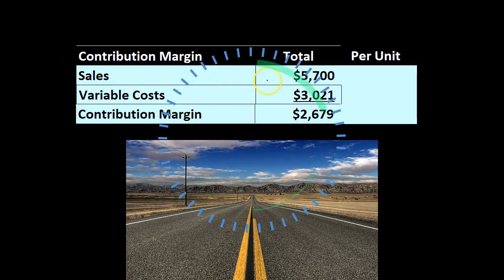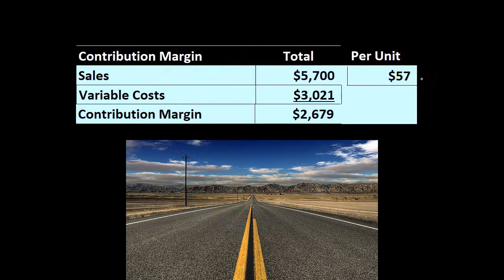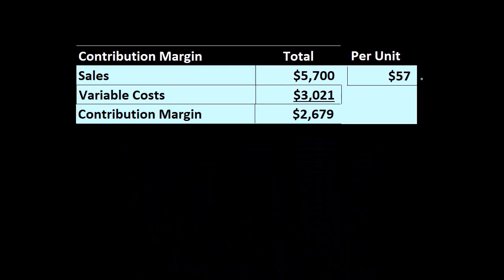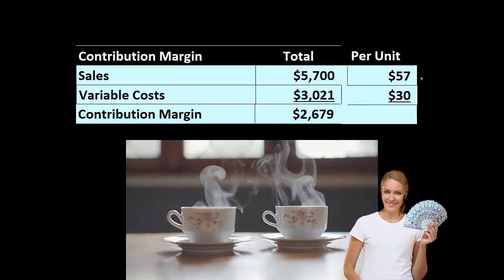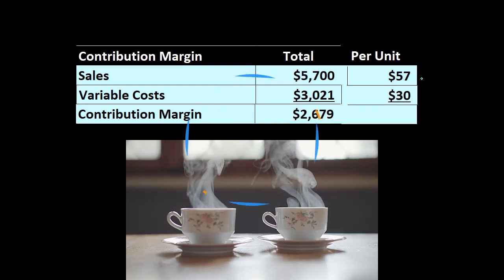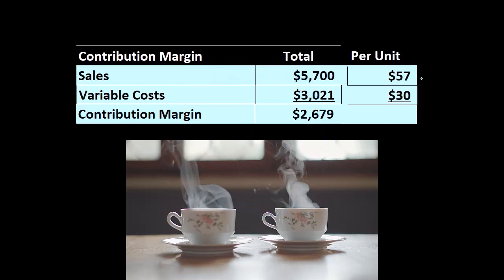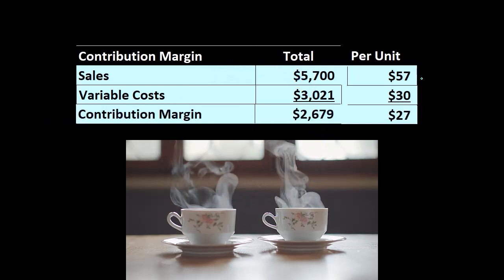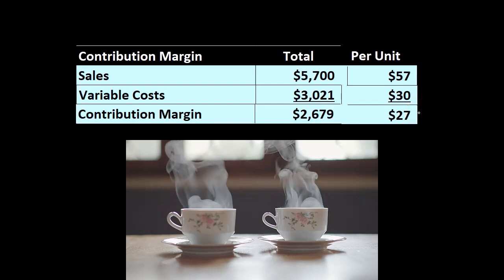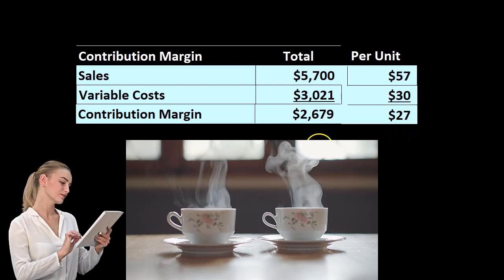For the contribution margin per unit example: sales are $57 per unit — that's what we sell our coffee mugs for. Then we have variable costs of $30 per unit, which we know from our CVP analysis where we identified the variable components of our costs. Subtracting: $57 minus $30 gives us a contribution margin per unit of $27. So we have the contribution margin in total and the contribution margin per unit.